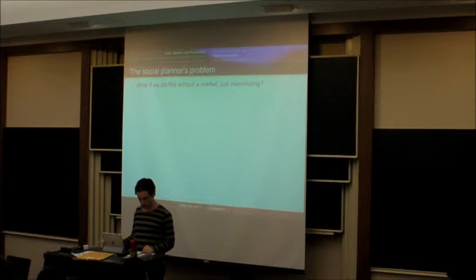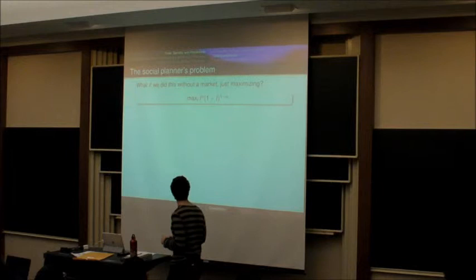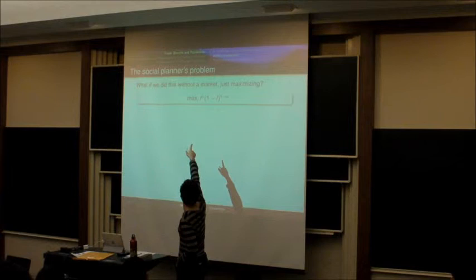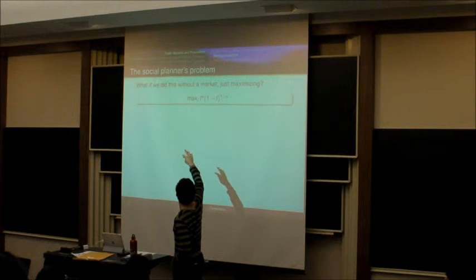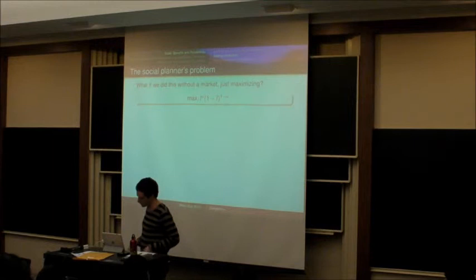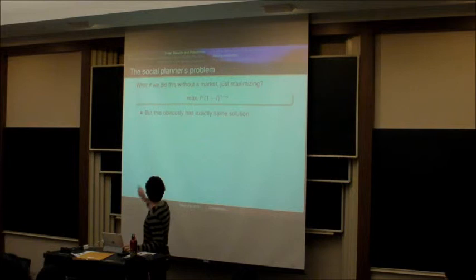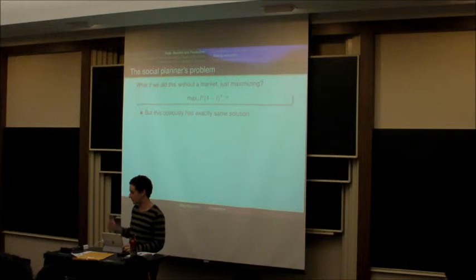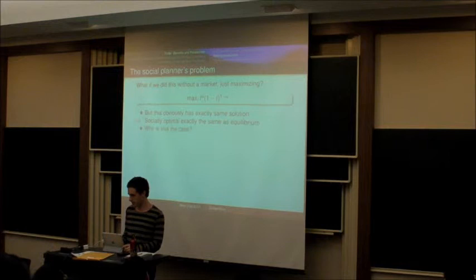On the other hand, if you were a social planner just maximizing, this is what the economy can produce. It can produce the amount of labor. The economy, if you're just doing it in a centralized way, you realize that the amount of labor to the alpha is the utility you're getting from the coconuts, and one minus the amount of labor to the one minus alpha is the utility that's coming out of the relaxation. But the solution to this problem is obviously exactly the same as the solution to the consumer's problem. And thus the social optimum is exactly the equilibrium.